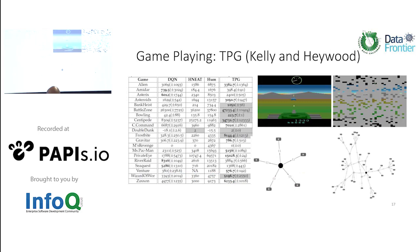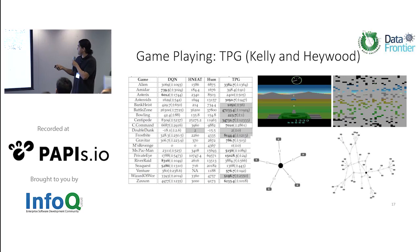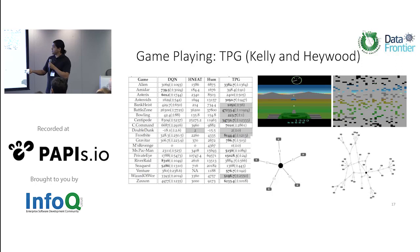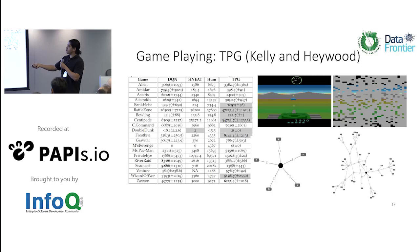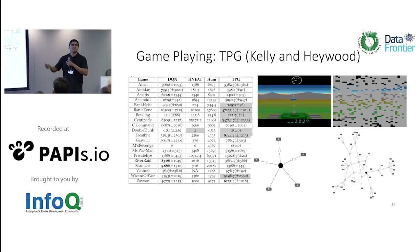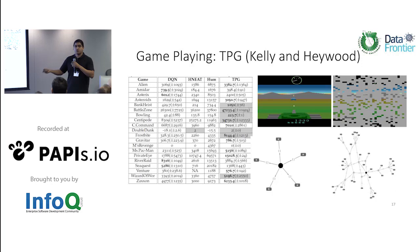Another cool example — not done by us but worth including — is work by Kelly and Heywood. They tackled the popular Atari game-playing benchmark and compared a deep reinforcement neural network, NEAT (an evolutionary algorithm for neural networks), and their new proposal called Tangled Program Graphs. The first cool thing is that it outperformed the deep neural network on many games. But the most interesting part is the size of the evolved programs: compared to a deep neural network with 800,000 connection weights, this small graph controls the program that outperforms it — making it much more efficient and potentially interpretable.